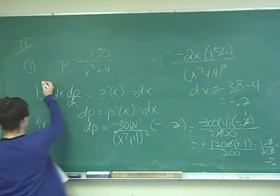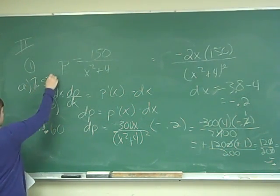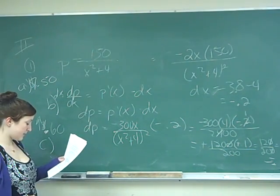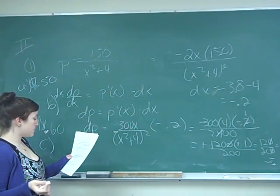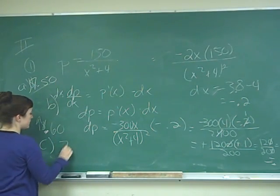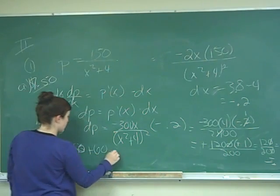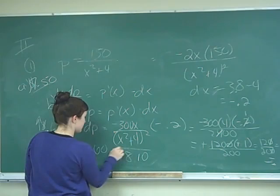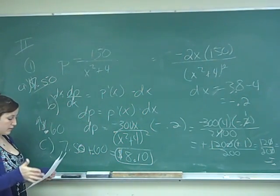Remember our initial in part A was $7.50, that's what we found. So C asks us to use parts A and B to estimate the selling price if the harvest is 3.8 million bushels. If the harvest is 3.8 million bushels, we take our $7.50 and add 60 cents to it. That's going to be $8.10. And that is your final answer for one.